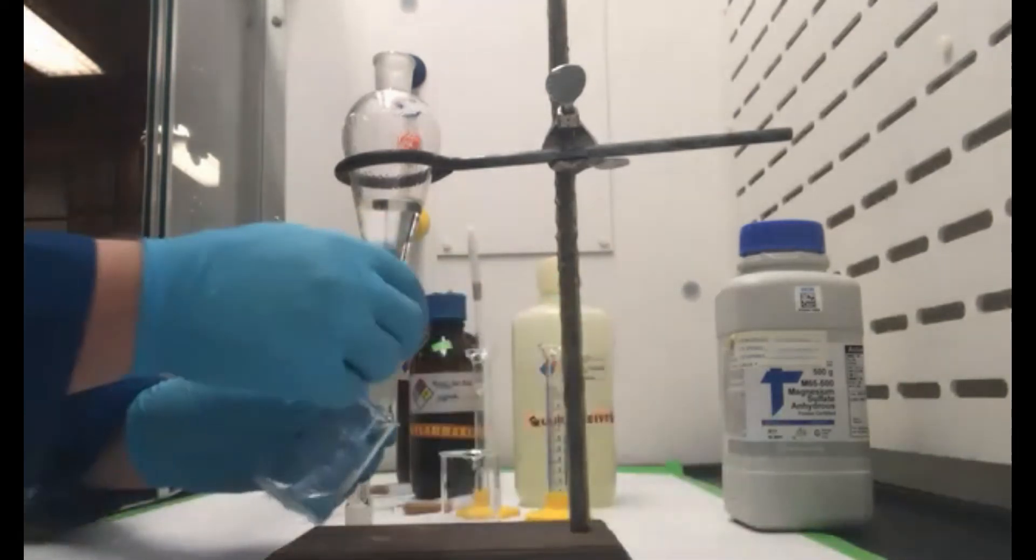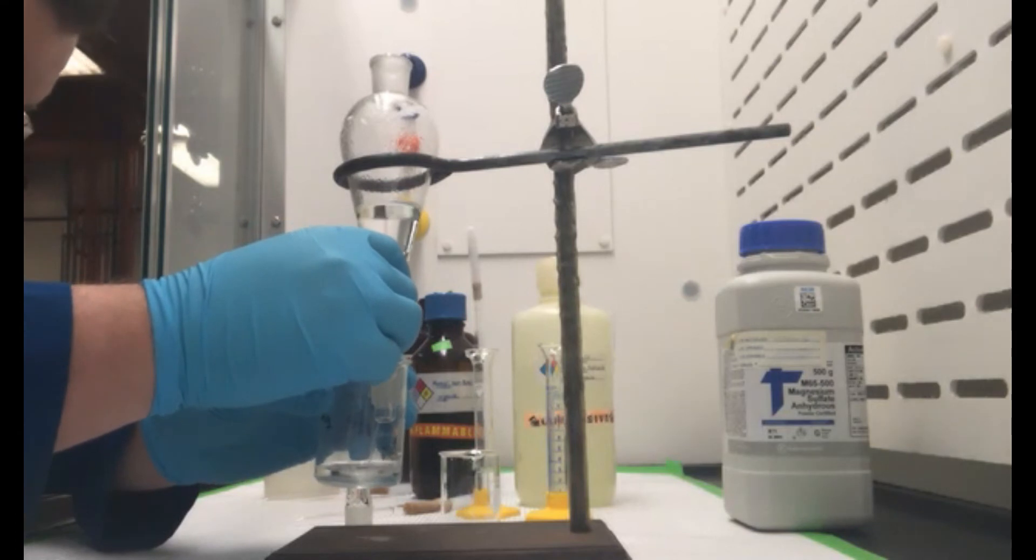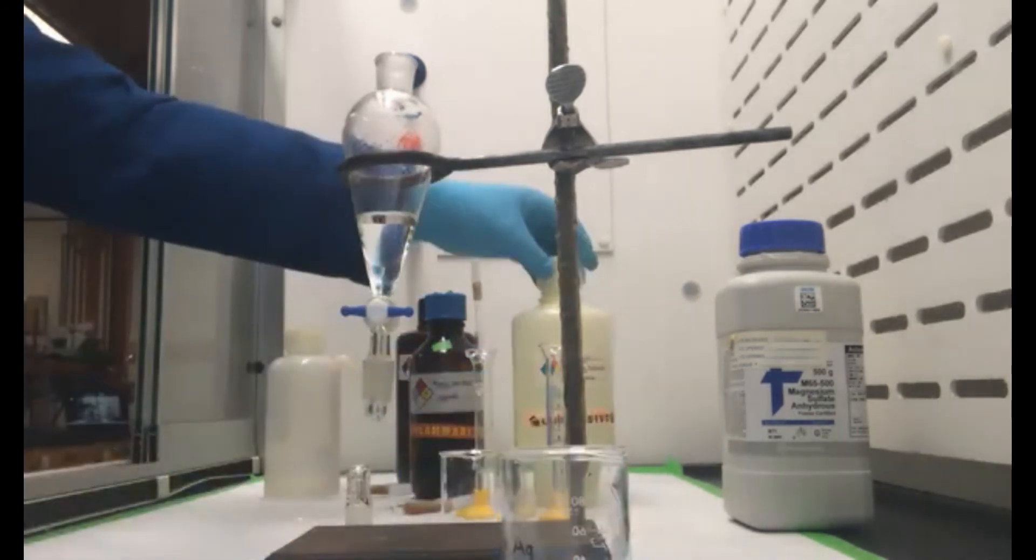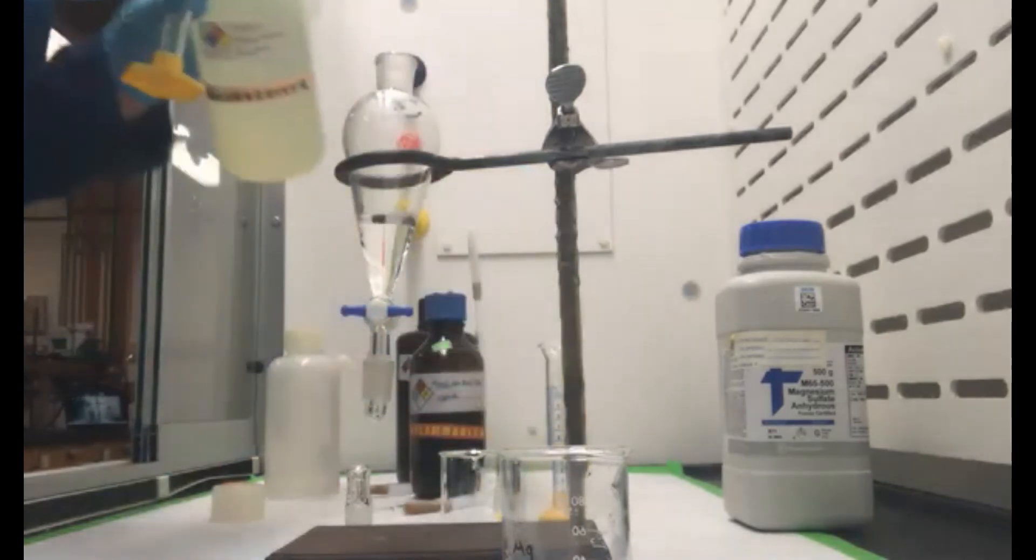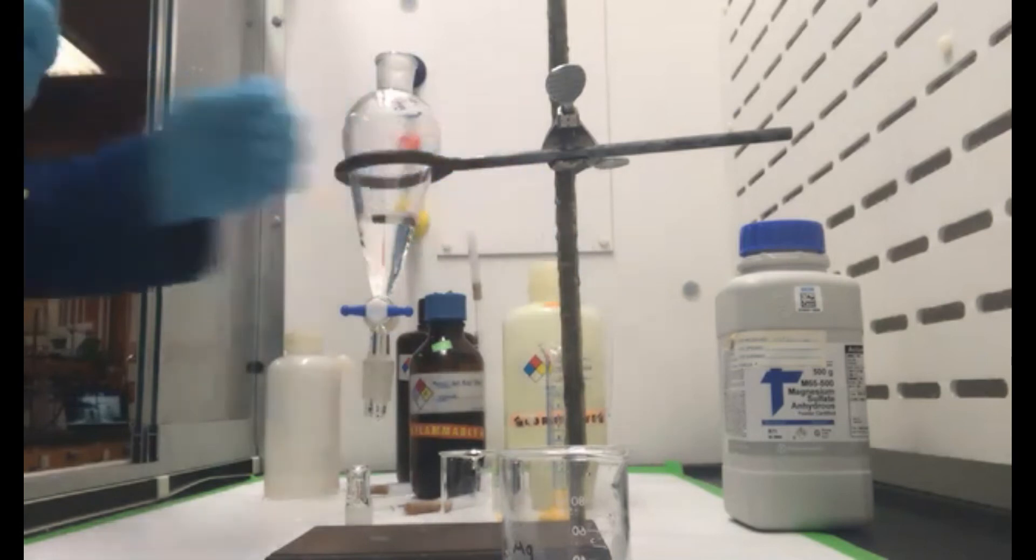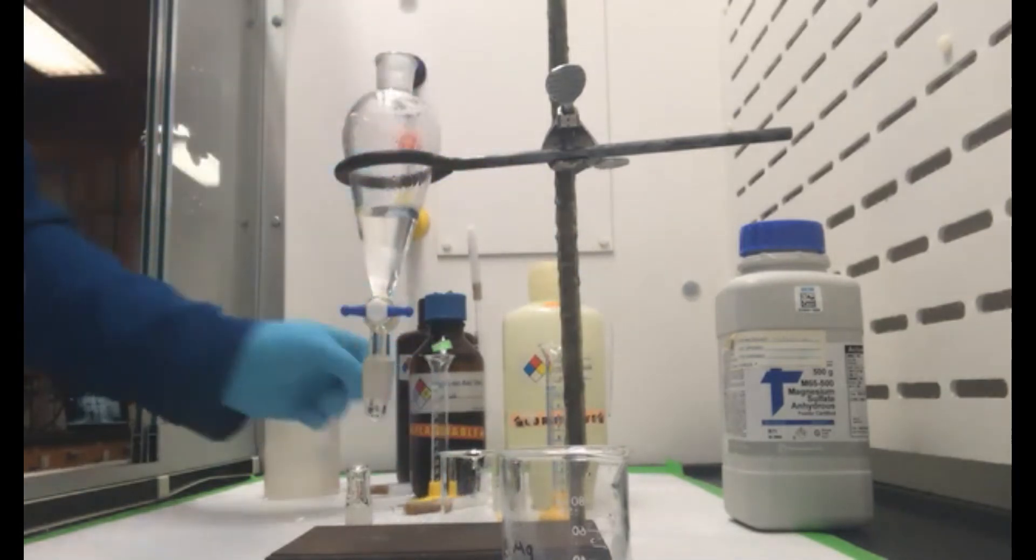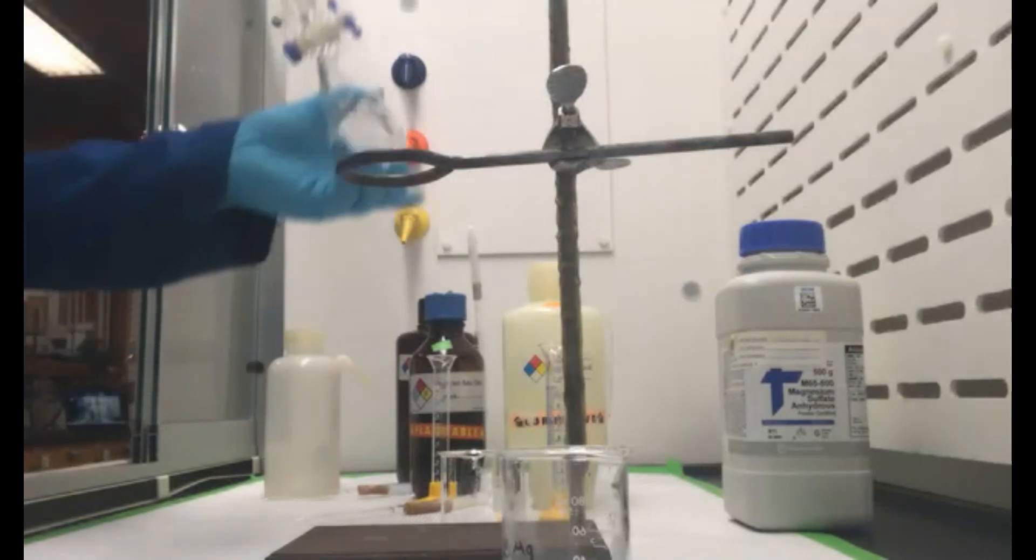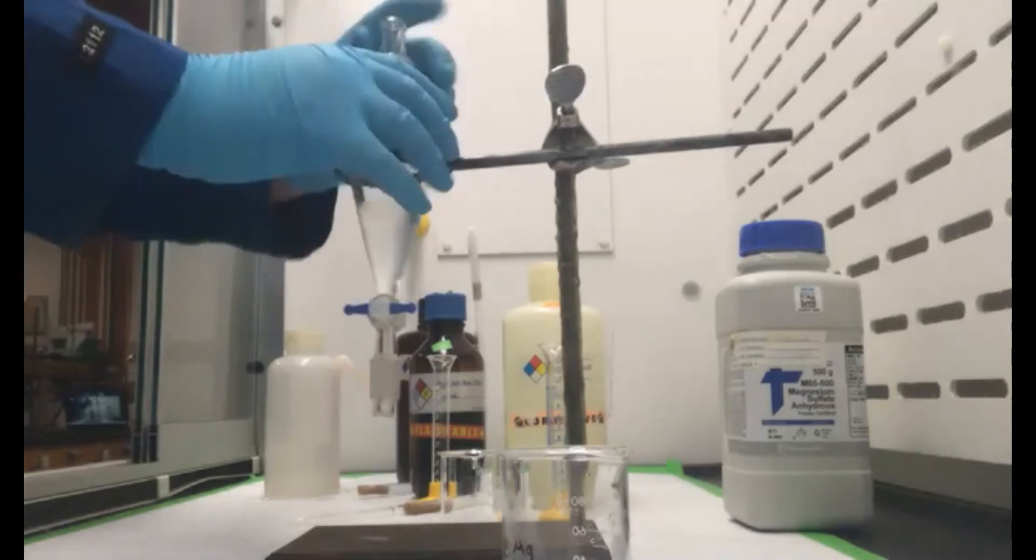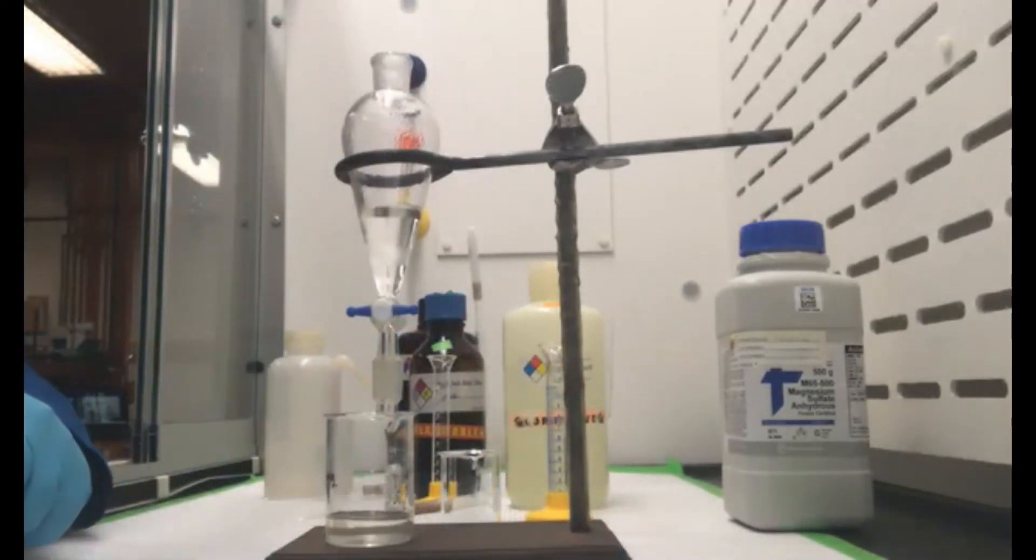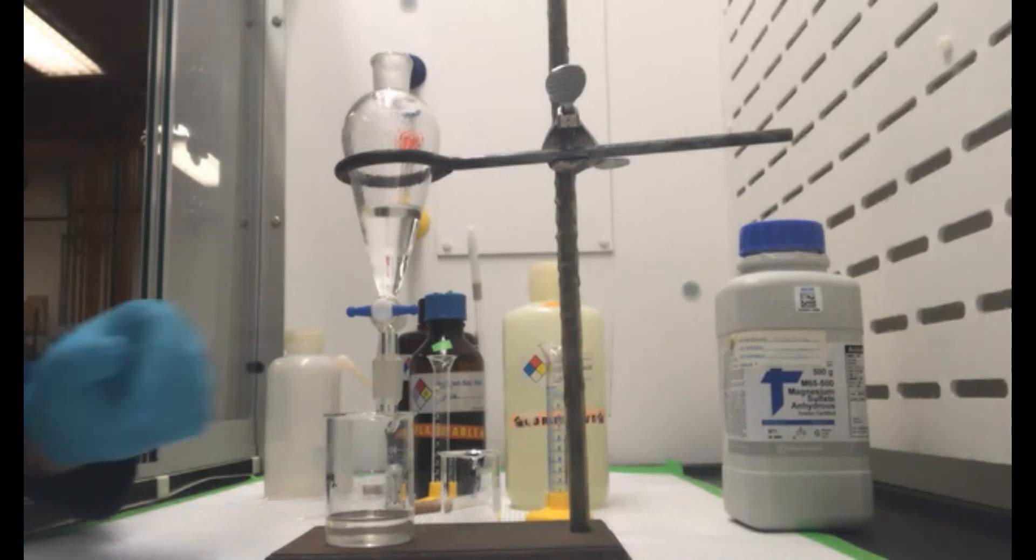All right, now we're going to go ahead and get rid of that aqueous layer. And we're going to add yet another 5 mils of our sodium hydroxide solution. We'll go ahead and wash that. We'll let that separate out. Then we'll remove the aqueous layer.